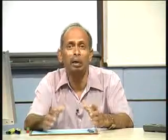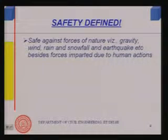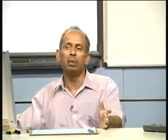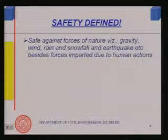Since safety is most important in buildings and structures, let us define safety first. Safe means safe against forces of nature — for example, anything on earth tends to go down, so a building must stand erect against gravity load and must not collapse under its own weight. It must also be safe against wind, rain, snowfall, and earthquake or similar natural forces.